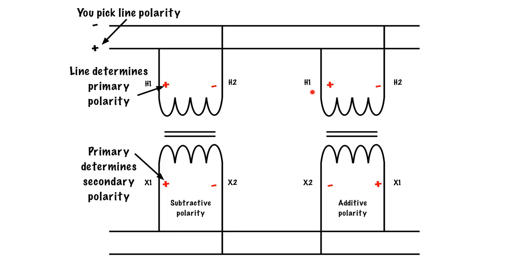Over here, I've got H1 is positive, which means that X1 over here is positive. So watch out for that because over here it was across the way. Over here, X1 is positive. H2 is negative. X2 is negative. So again, you pick the line polarity. The line polarity determines the primary polarity, and the primary polarity determines the secondary polarity.